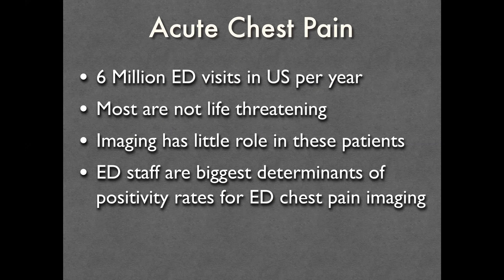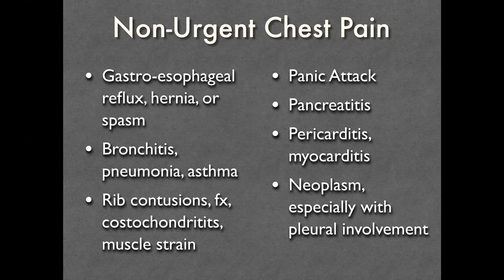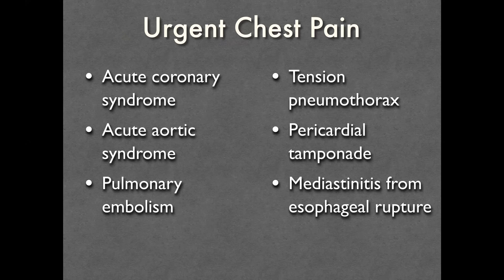It's a big topic with a lot to cover in the next 30 minutes. Let's take the perspective of acute chest pain, which is a very common scenario encountered in emergency rooms — six million ED visits in the US per year. Most presentations are non-life threatening and imaging has little role in those patients. The ED staff are the biggest determinants of positivity rates for ED chest pain imaging. There are five key urgent causes: acute coronary syndromes, acute aortic syndromes, pulmonary embolism, tension pneumothorax, pericardial tamponade, and mediastinitis from esophageal rupture — that's actually six.